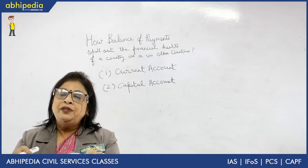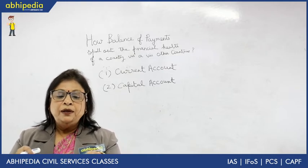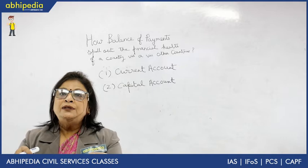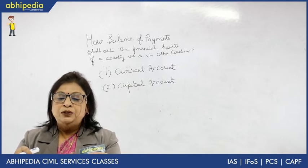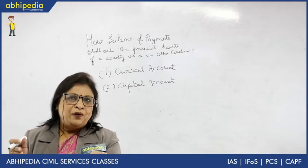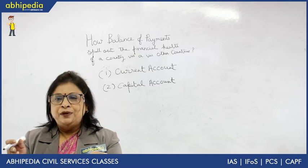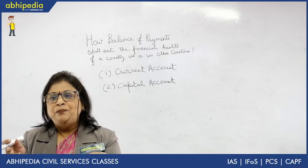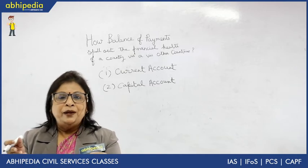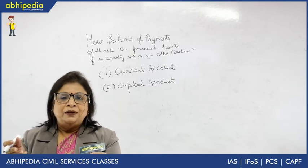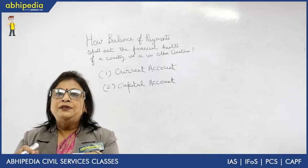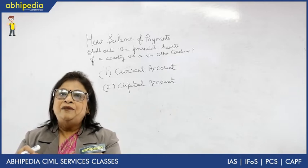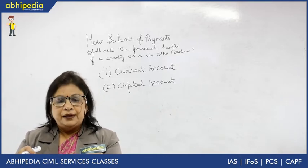Beginning with current account — number one is export and import of visible material goods. These can be tea, coffee, rubber, jewelry, machines, and equipment. That is the first item of our current account.